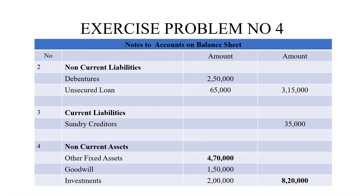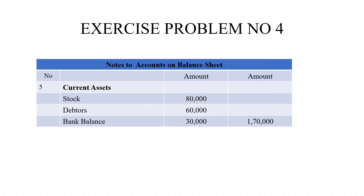Goodwill comes under non-current assets at 1,50,000 rupees, and investments at 2,00,000 rupees, giving a total non-current assets of 8,20,000 rupees. Current assets: stock is 80,000, debtors are 60,000, and bank balance is 30,000, totalling 1,70,000 rupees.